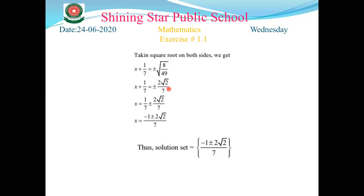So x + 1/7 = ±2√2/7. Taking 1/7 to the right-hand side, x = -1/7 ± 2√2/7. That is your solution set.